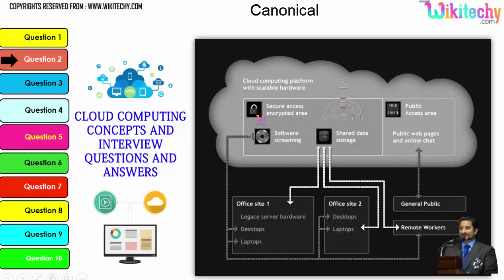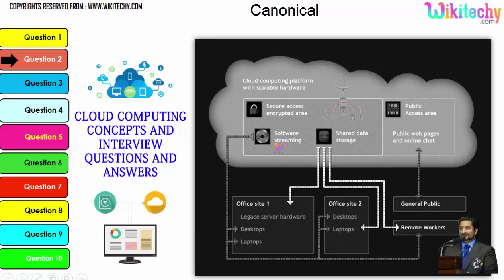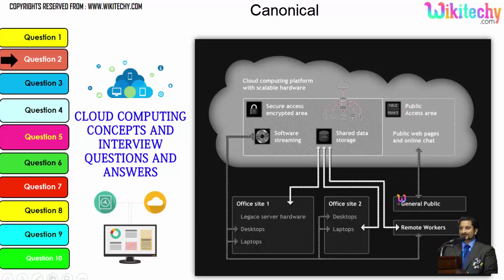Cloud computing has a public access area — public web pages for end users — and also provides secure data access, shared data storage, and software streaming. Companies can use it as a private kind of environment, and the public can use it to access web pages or websites. This is how cloud computing works.